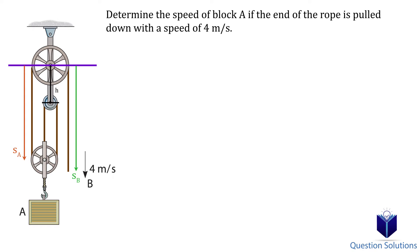So now let's write an equation to represent the rope. So we have SA plus SB plus 2 times SA minus H is equal to the total length. Let's simplify this equation and then take the derivative to get the velocity.